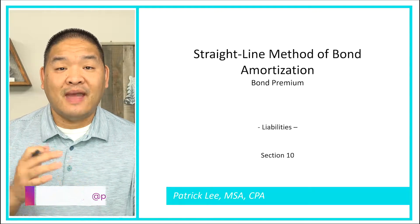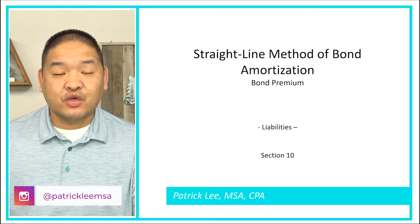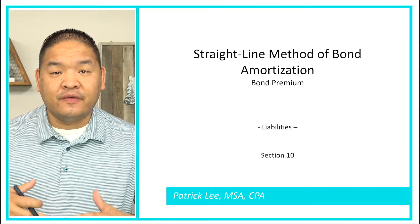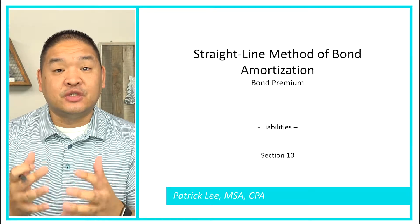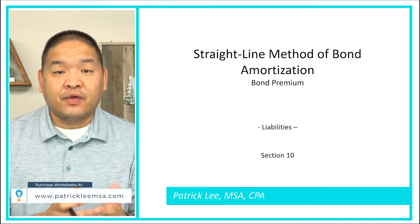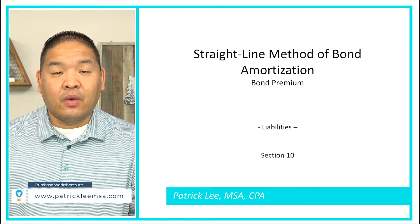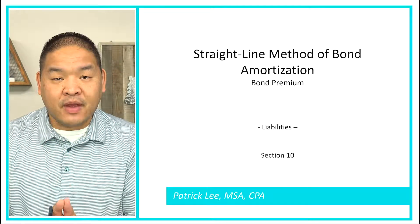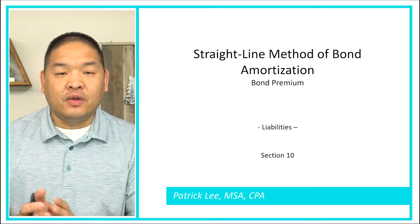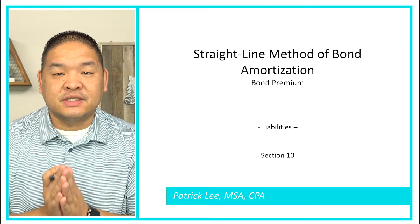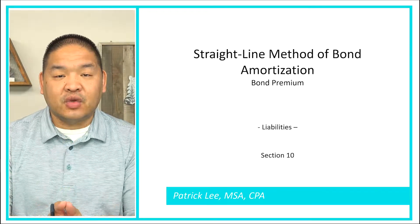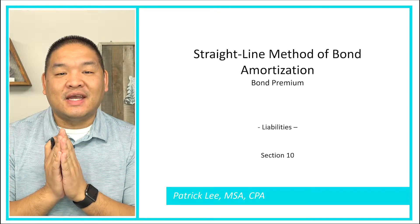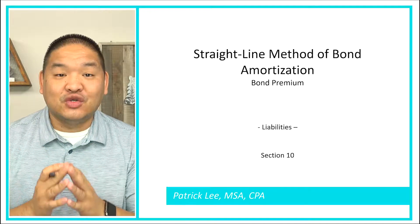In this lesson we're going to go over the straight line method for amortization of the bond premium. We've got a bond premium that we've got to deal with. It's going to reduce our interest expense for the life of the bond, and we're going to do that using the straight line method. We have two methods — the straight line method in this lesson, and then in a few lessons we'll use the effective interest method.